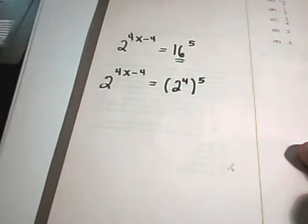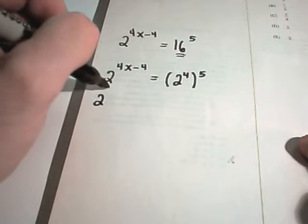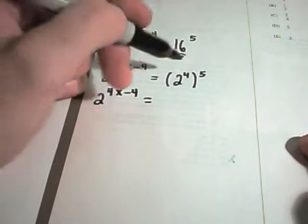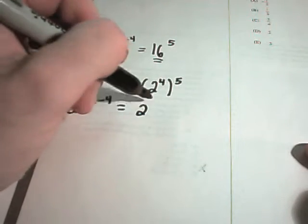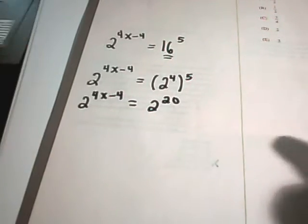So we can actually write 16 as 2 raised to the 4th power. And then, not doing anything to the left side. Remember, if the exponents are in parentheses, you can multiply those. So we'll get 2 to the 20th power.